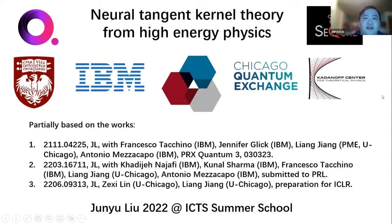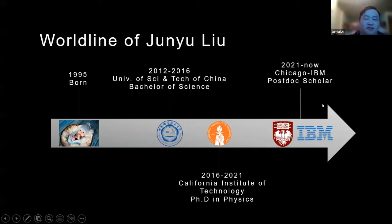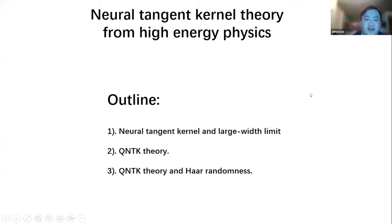That direction is using hadron physics to solve algorithms about classical or quantum computing, or machine learning, and using insights from high energy physics and quantum field theory to better understand what is going on in those algorithms. My talk goes in that sense — the title is called Neural Tangent Kernel Theory from High Energy Physics. I will explain what that means. I'm a joint postdoc scholar between the University of Chicago and IBM.